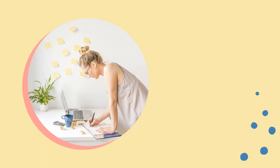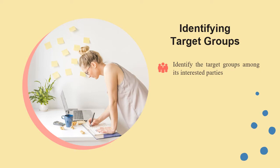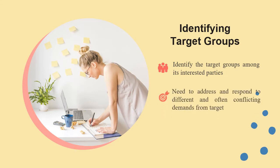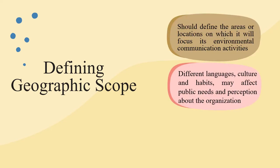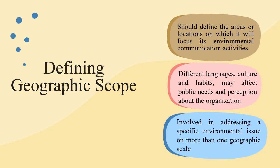Next, we will be identifying target groups, where identification is among interested parties. Different and often conflicting demands from target groups need to be addressed and responded to. Under the same topic, defining geographic scope is also important — what should be defined is the areas or locations on which the organization will focus its environmental communication activities. Different languages, cultures and habits may affect public needs and perception about the organization, as well as involvement in addressing a specific environmental issue on more than one geographic scale.